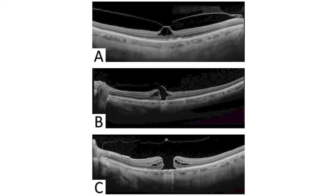Panel A shows vitreomacular traction — there is no PVD here, the vitreous is still adherent at the optic nerve, with partial separation and traction, and a premacular bursa is visible with the posterior hyaloid pulling up on the retina. In another example with no PVD, there is a full thickness macular hole with an operculum still attached. In panel C, the operculum is off but there is still no PVD — the posterior hyaloid remains attached at the optic nerve.